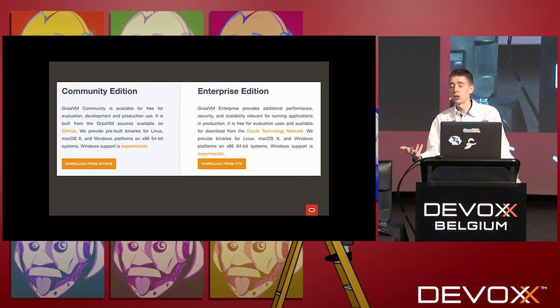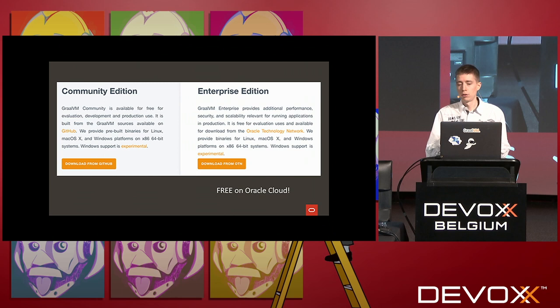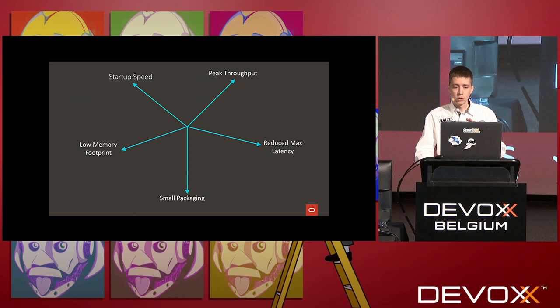GraalVM comes in two flavors: Community Edition and Enterprise Edition. Today in the demos I'll mostly show the performance of the Community Edition, which is already in many scenarios better than the current compilers in the HotSpot Virtual Machine. The Enterprise Edition adds additional performance on top. The Community Edition is free and open source; the Enterprise Edition requires a license, but is free for use on Oracle Cloud.